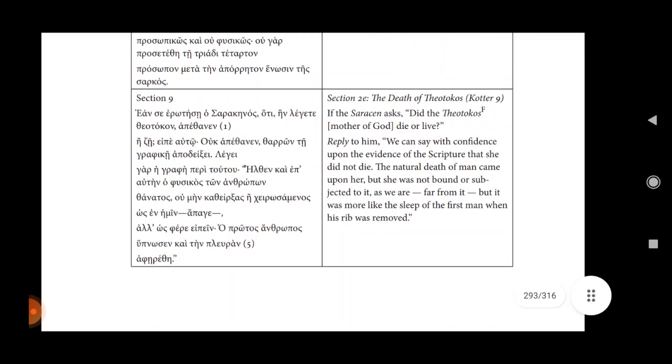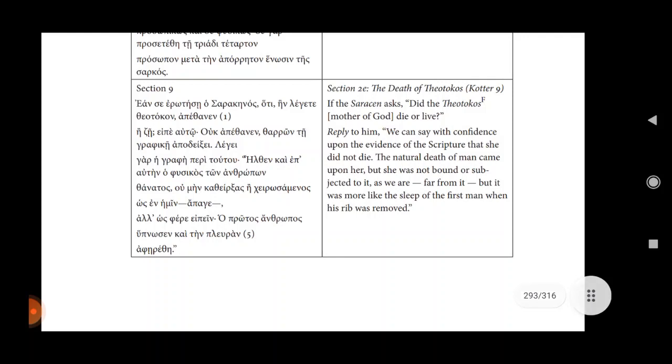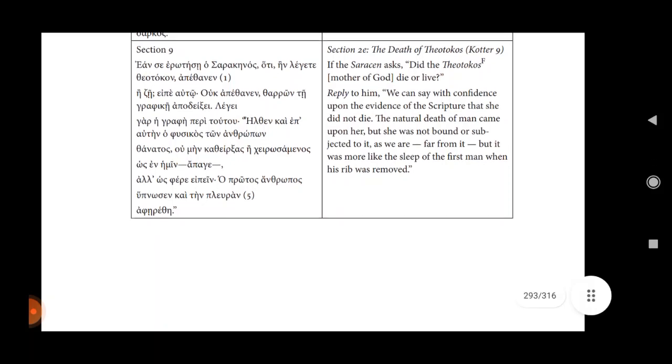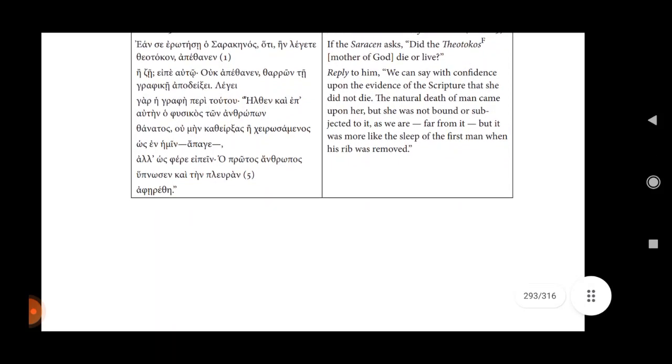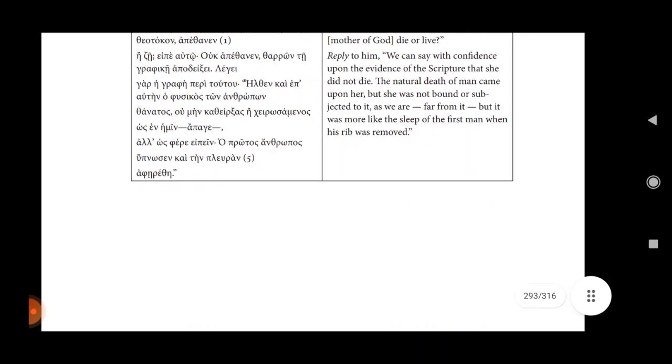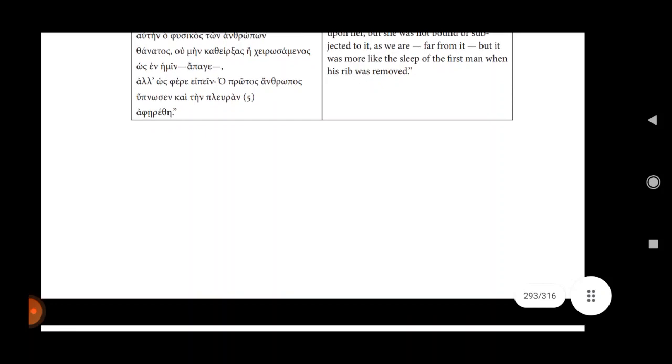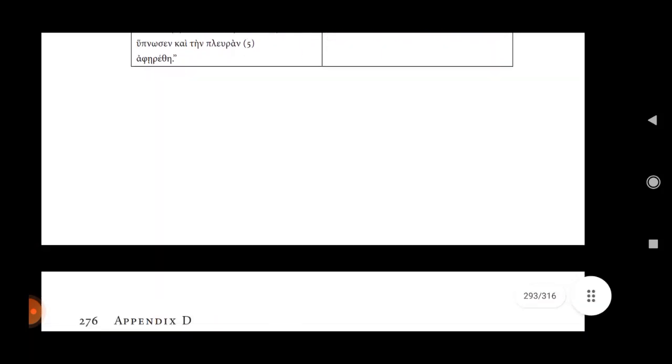Section 3, the death of Theotokos. Quotex 9. If the Saracen asks, Did the Theotokos mother of God die or live? Reply to him, we can say with confidence upon the evidence of the scripture that she did not die. The natural death of man came upon her, but she was not born or subjected to it, as we are. Far from it. But it was more like the sleep of the first man when his rib was removed.